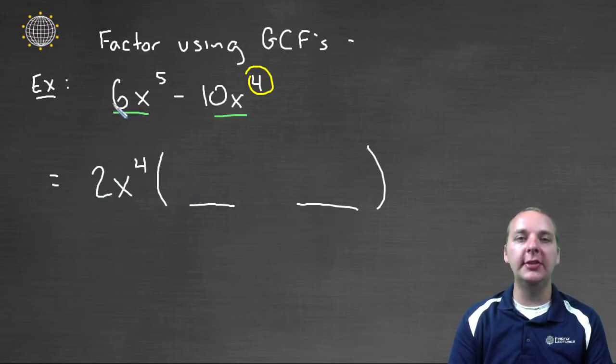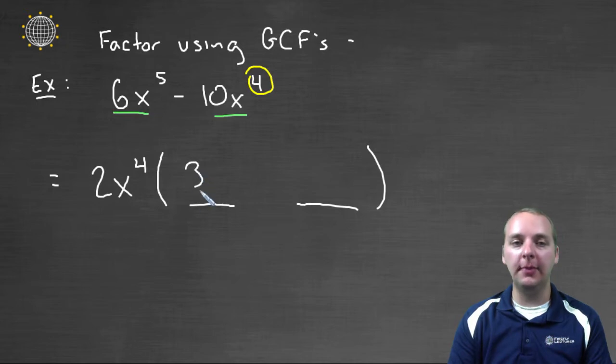So let's think about the first term here. 2 times what would give you 6? 2 times 3. And x⁴ times what would give you x⁵? x⁴ times x would give you x⁵. So 3x is what's remaining in your polynomial here. And then if this is a minus, assuming you pulled out a positive 2x⁴, this will still be minus.